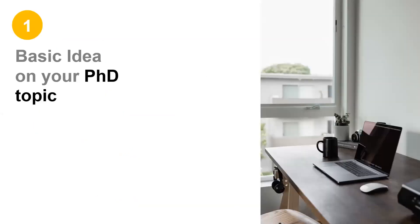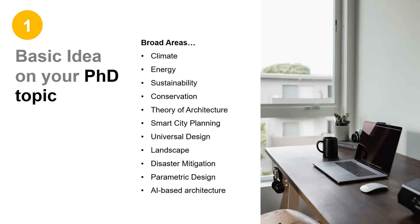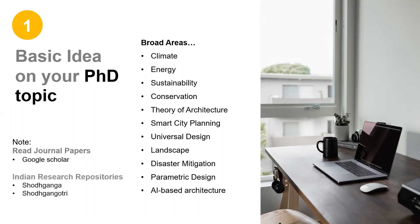Point number one. Before applying, you should have a basic idea on your PhD topic. It is a valid question to ask yourself once you even think of undergoing doctoral studies. Think what interests your curious mind in various broad fields such as climate, energy, sustainability, conservation, etc. Recall your experience in field or classroom assignments. You can even start reading some good quality journal papers by accessing them on Google Scholar, or look at PhD titles from Indian research repositories like Shodh Ganga and Shodh Gangotri — links are provided in the description box below — or research repositories of universities abroad. Remember, your PhD topic selection should not necessarily depend on any of your previous degree dissertation topics. So take your time and brainstorm ideas.